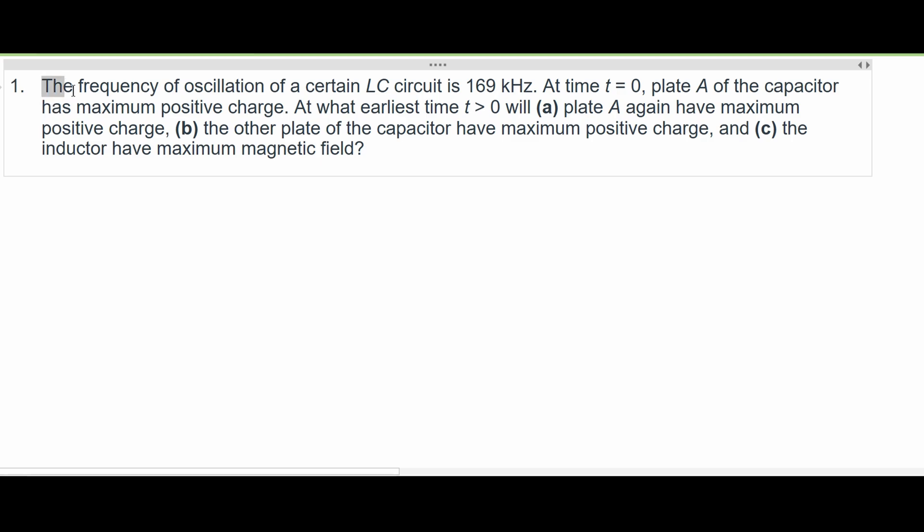For question one, we're given that the frequency of oscillation of a certain LC circuit is 169 kilohertz. At time T equals zero, plate A of the capacitor has maximum positive charge. We're asked, at what earliest time T greater than zero will plate A have maximum positive charge?